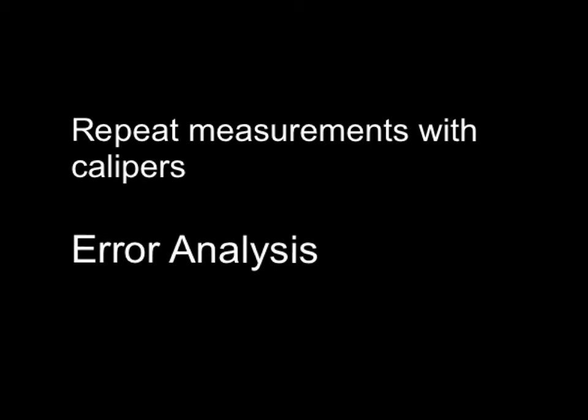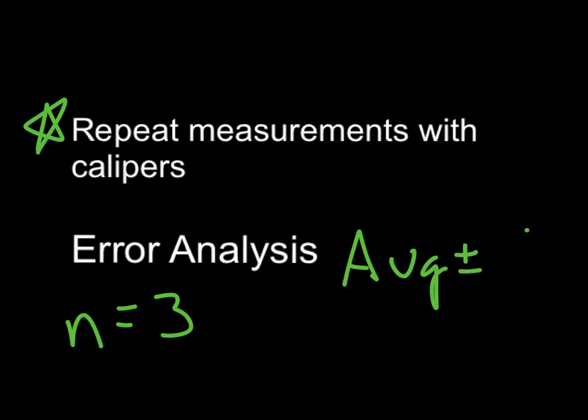We are going to repeat these measurements with the calipers three times each on three different objects for circumference and diameter. And then for your error analysis, again, since we have three measurements, it's going to be average plus or minus the max deviation from the average. All of your measurements will have this, some average quantity minus a maximum deviation.